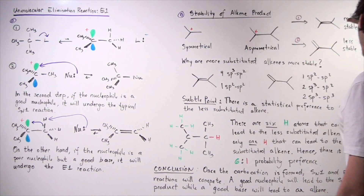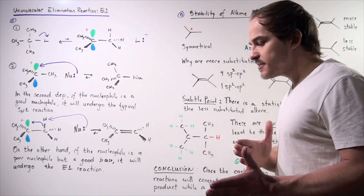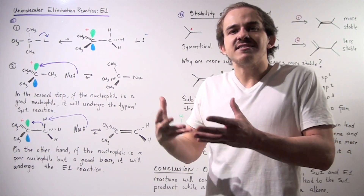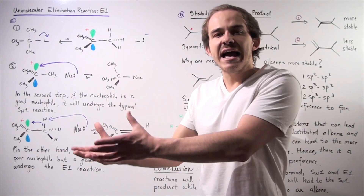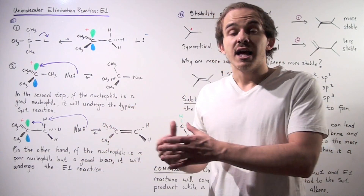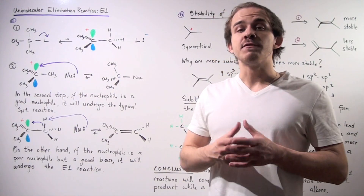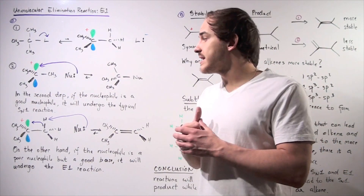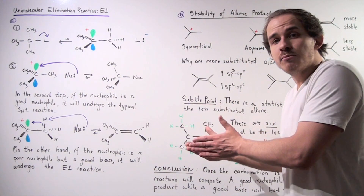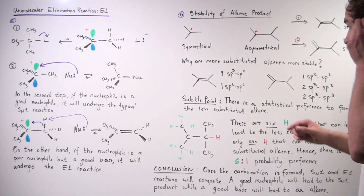To answer why more substituted alkenes are more stable, we need to remember SP hybridization. The more S-character we have in a bond, the more stable that bond. The less S-character — meaning more P-character — the less stable our bond. So: more S-character means more stable; less S-character and more P-character means less stable.